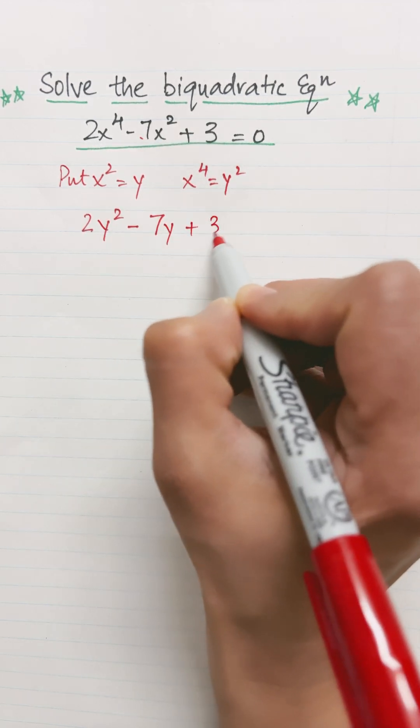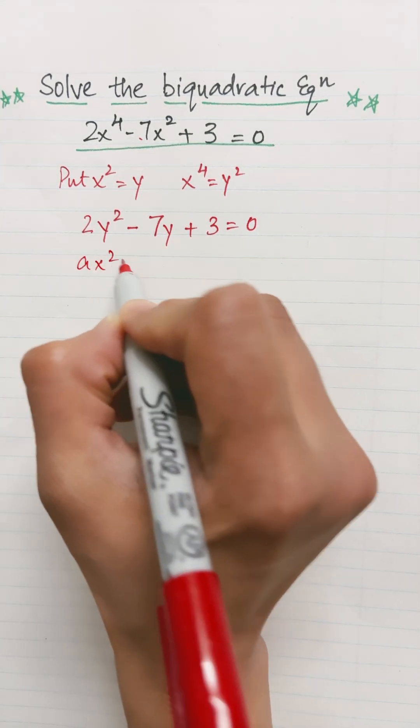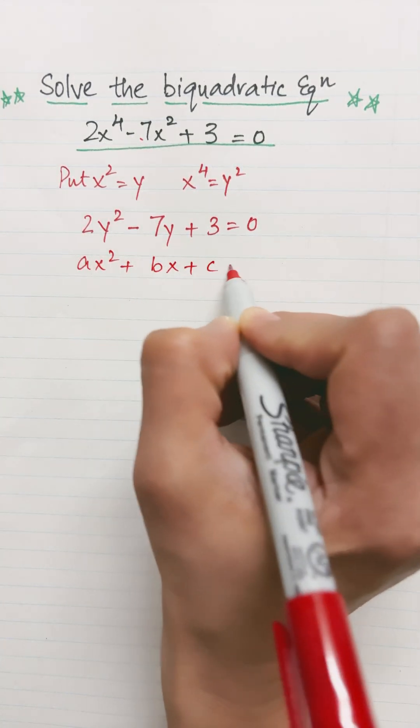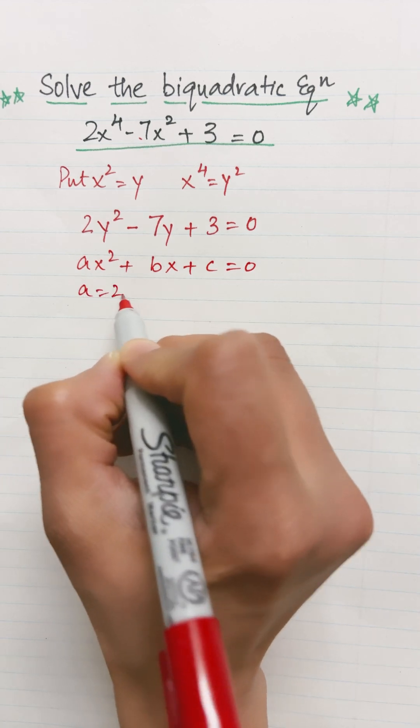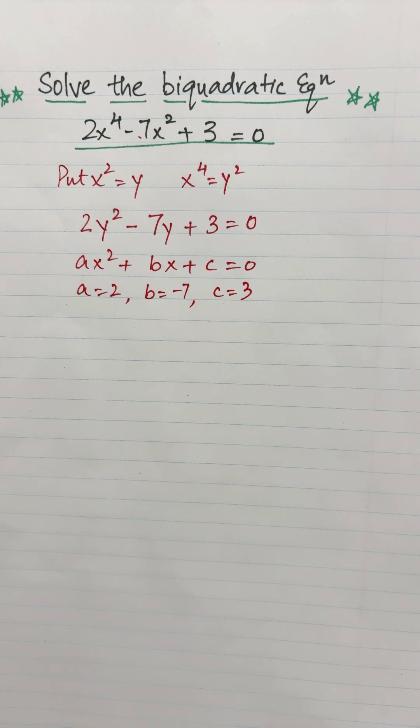Now this is our quadratic equation of the form ax squared plus bx plus c, where a is 2, b is minus 7, and c is 3. So we will solve it as usual using the discriminant and the quadratic formula.